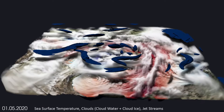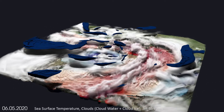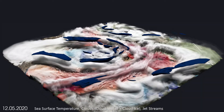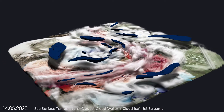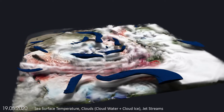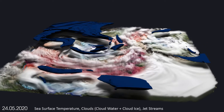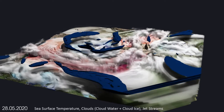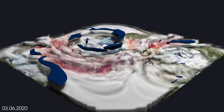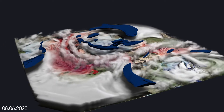High above the clouds are the jet streams, two bands of strong winds that circulate our poles. Airplanes use these to save fuel, but they also strongly influence our weather, especially the alternation between high and low pressure systems. If the jet streams are weak, as in recent years, extreme weather events such as heat or cold waves are more common.